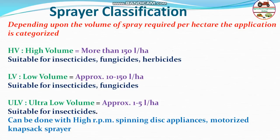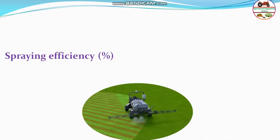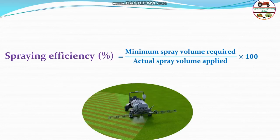Next is spraying efficiency. When liquid is applied, some spray drifts away and is not deposited on the target, so more than the required amount is typically applied. Spraying efficiency is defined as the minimum spray volume required divided by the actual spray volume applied. For example, if minimum is 1 liter but 1.5 liters is applied due to drift from wind or other factors, the efficiency is calculated accordingly.